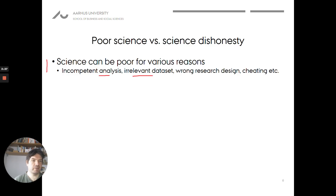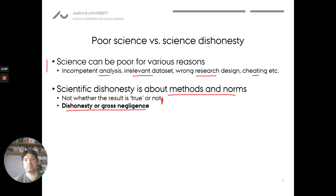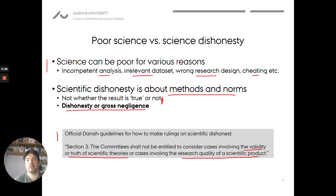Science can be poor for many reasons — incompetent, irrelevant datasets, poor research design — but we're interested solely in the cheating element. We look at methods and norms, not whether anything is true. Something dishonest can in principle be true, and something false can be an honest piece of work. As emphasized by official Danish guidelines, committees on scientific dishonesty shall not consider cases involving the validity or truth of scientific theories, or the research quality of a product. It's solely about how research was conducted and whether dishonesty or gross negligence was present.